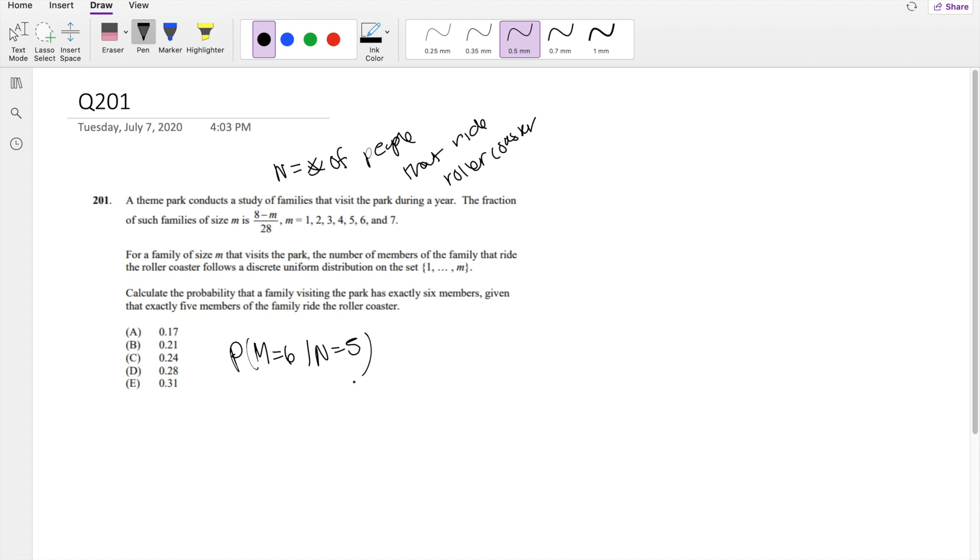Okay, so this is what we're looking for, and they give you the probability of m, which is given here, and they also give you the probability of n, f of n given m, little m, which is equal to this thing right here.